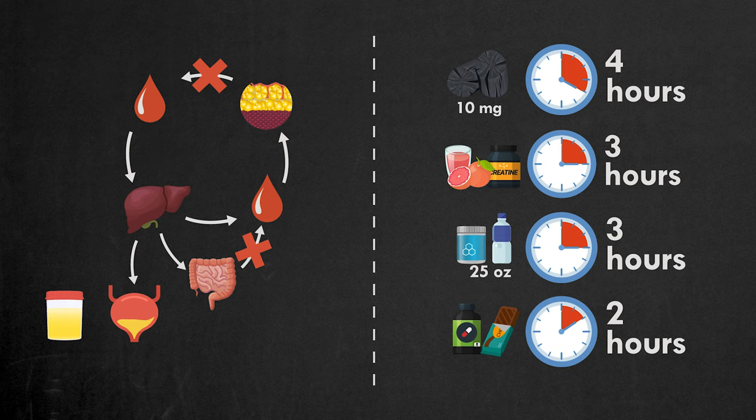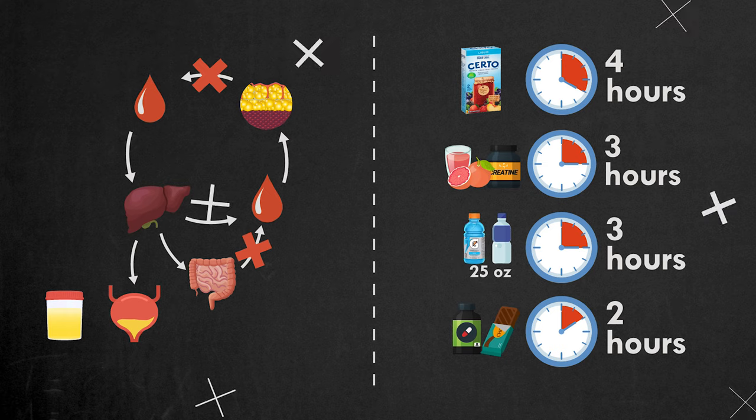If you'd like, you can substitute activated charcoal with Certo fruit pectin and the electrolyte powder with a Gatorade.